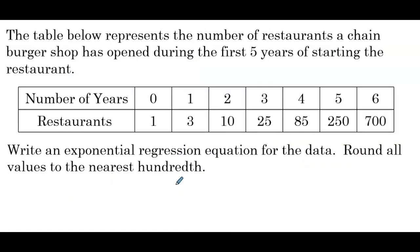The table below represents the number of restaurants a chain burger shop has opened during the first five years. Write an exponential regression equation for the data, round all values to the nearest hundredth. Looking at the table it makes sense — we go from 1 to 3 to 10 to 25, so it looks like we're multiplying by about 2.5 to 3 to go from one year to the next.